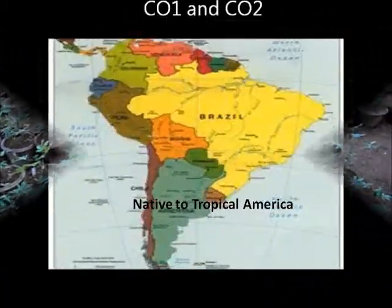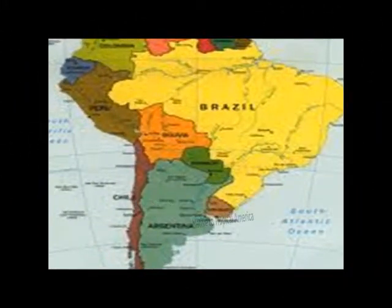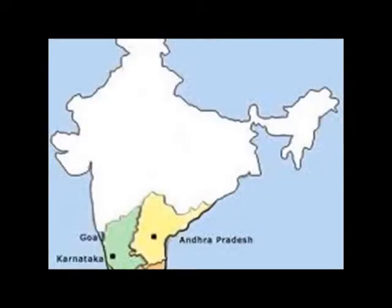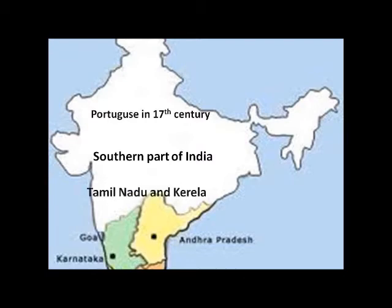Cassava is native to tropical America. In India, it was introduced by Portugal during the 17th century and is mainly cultivated in the southern part of India, especially Kerala and Tamil Nadu.